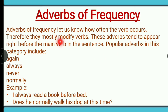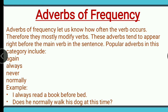Adverbs of frequency tell us how often the verb occurs — that is, how many times an action happened or takes place. Whether the action happens every time or once in a while, frequency tells you how many times that action took place. Because it talks about how many times an action happens, adverbs of frequency mostly modify verbs.